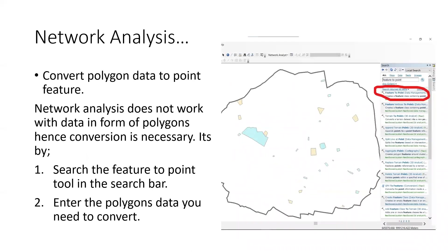For the conversion of polygon data to point features: network analysis does not work with polygons, so we have to create point features. To do this, we use the feature to point tool, which we can search for in the search bar. We enter the polygon data we need to convert, and after that we get our points — here you can see the schools around the Bondo area, which I converted into points after the process.